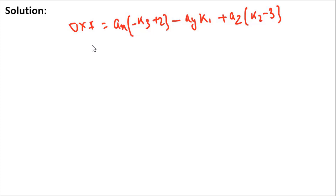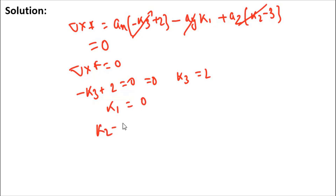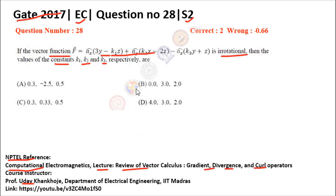For the vector function to be irrotational, del cross F must equal zero, so all components must be zero. Setting each to zero: −k3 + 2 = 0 gives k3 = 2; k1 = 0; and k2 − 3 = 0 gives k2 = 3. Therefore k1 = 0, k2 = 3, k3 = 2, and option B is the correct answer.